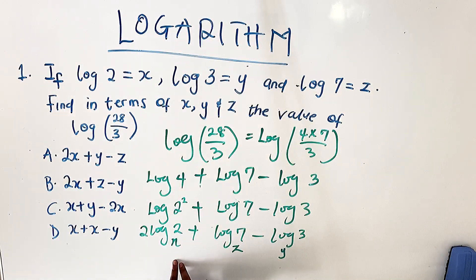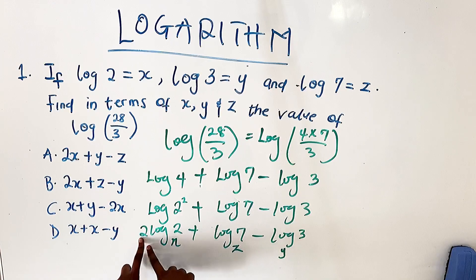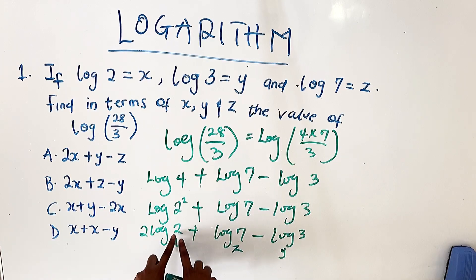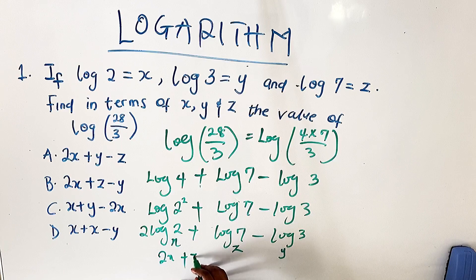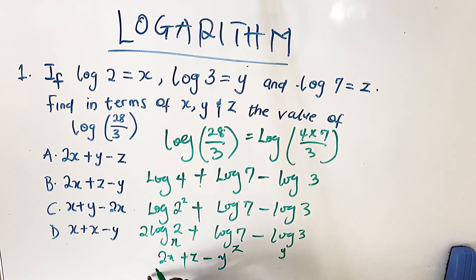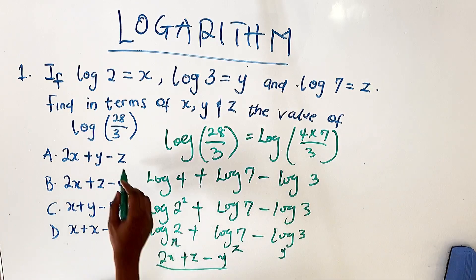This value is the same as 2 multiplied by x, so we have 2x plus z minus y. That is our answer.